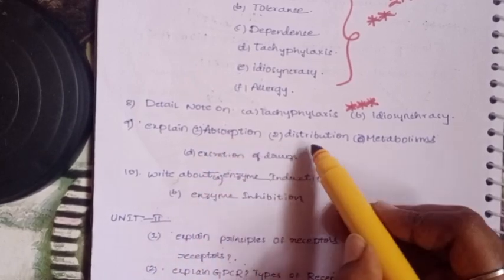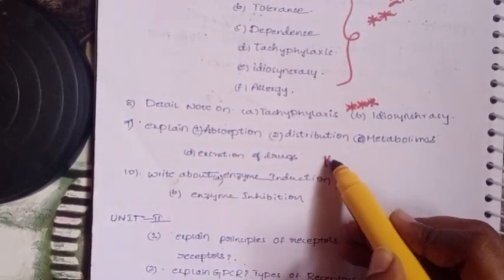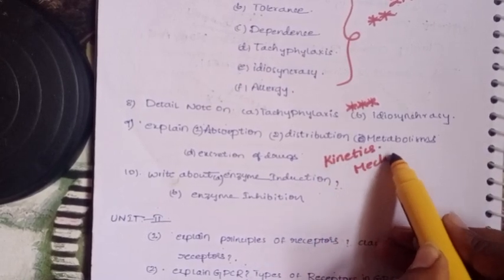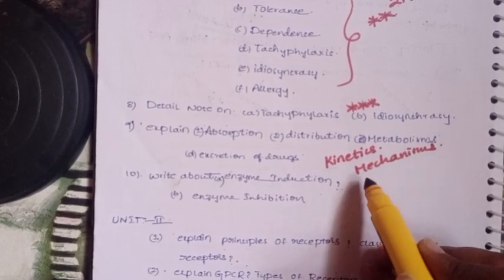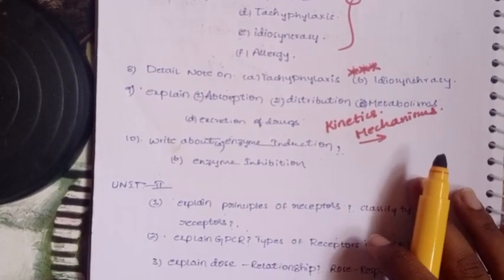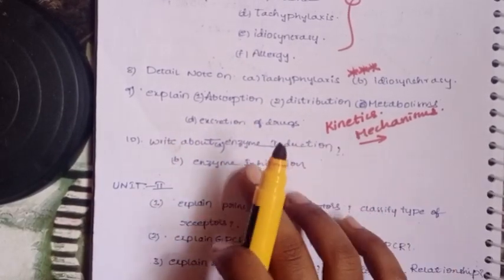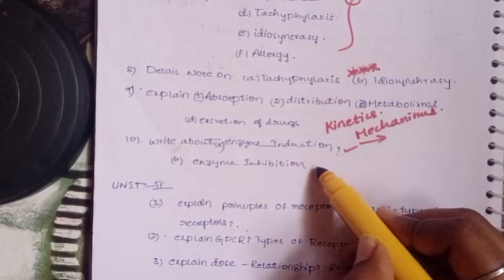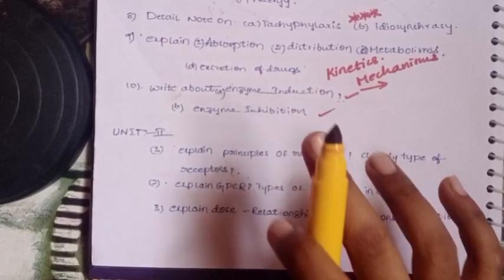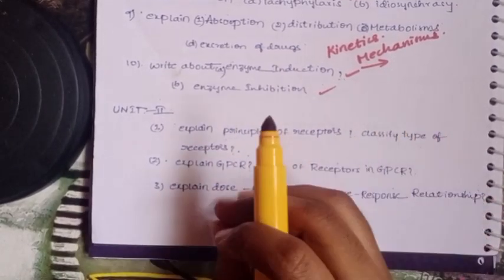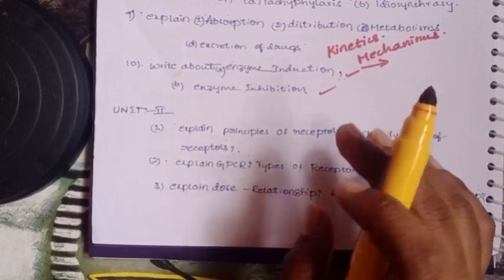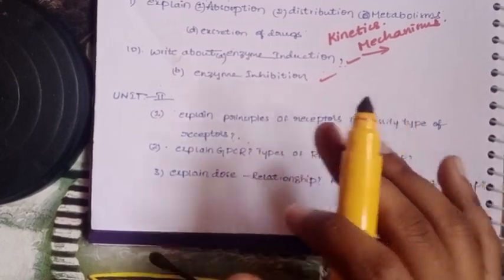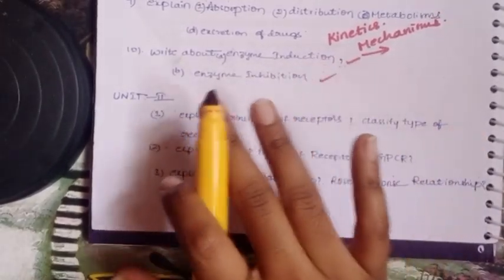Next, absorption, distribution, metabolism, and excretion - this is pharmacokinetics. Or else, mechanism of drug action - how the drug acts when we take it into the body. These are important for Unit 1.